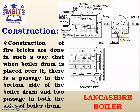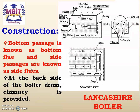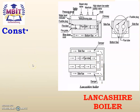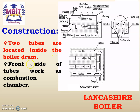The passage at the bottom side is known as the bottom passage or bottom flue, and the two passages on the sides are known as side flues — the left hand side flue and the right hand side flue. At the back side of the boiler drum a chimney is provided. Two tubes are located inside the boiler drum, and the front portion of the tubes works as a combustion chamber, where the fire grate is provided for burning fuel.